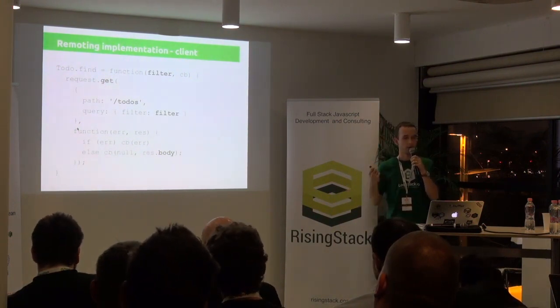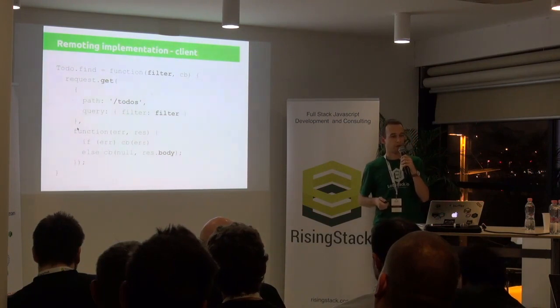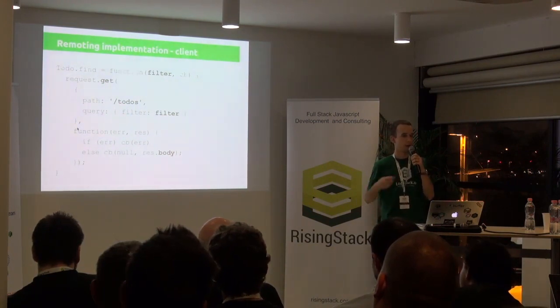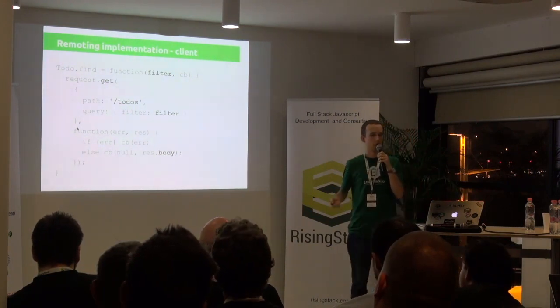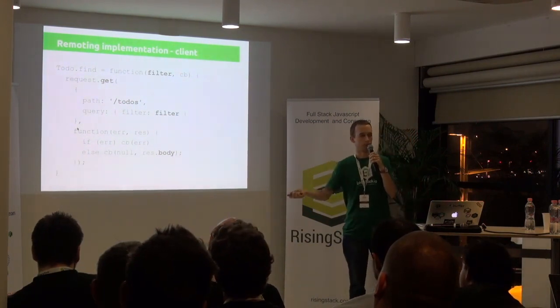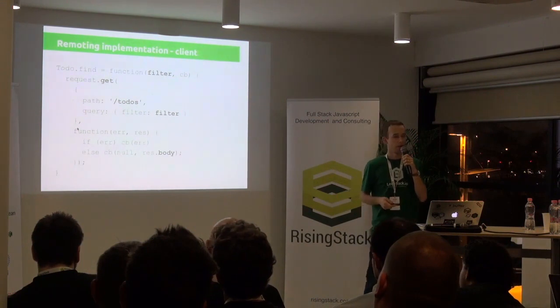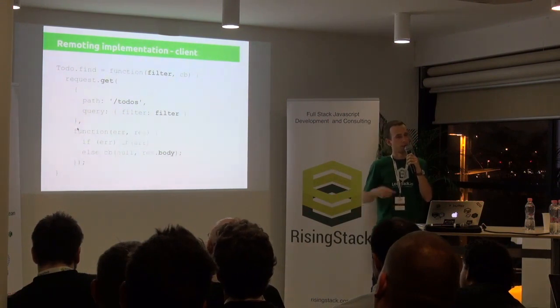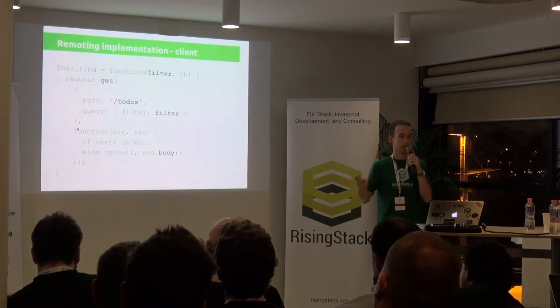And the fortunate thing is that we can use the very same metadata to build the client as well, except we have to do it the other way around. So instead of defining the server route, we do a client request. In this example, I am using the NPM module request — I can GET slash to-dos and whatever parameters I got in the function, and then process the response.